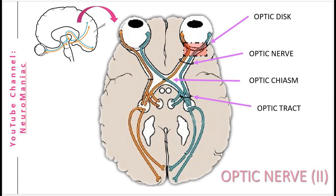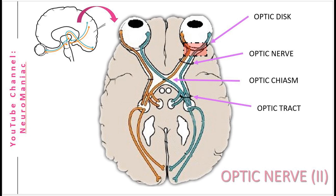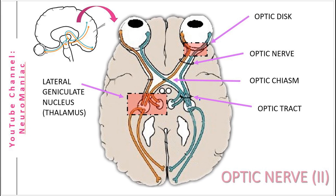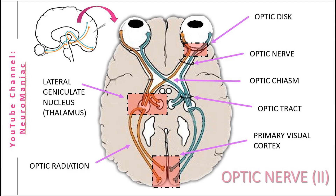From the chiasm, the nerve continues as the optic tract to the lateral geniculate nucleus of the thalamus. The thalamus redirects the sensory information to other parts of the brain. One path followed is to the primary visual cortex of the occipital lobe via nerves of the optic radiation. Just a note — this diagram of the brain is the inferior view, so the left and right sides are swapped.